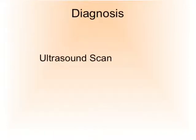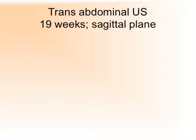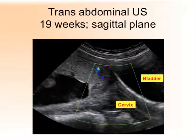Diagnosis: ultrasound scan. When applied carefully, it is very sensitive — very good at detecting low-lying placenta or placenta previa. A transvaginal scan, or a transabdominal scan if the bladder is full — if the bladder is not full, that could result in false diagnoses. An example of a transabdominal ultrasound scan at 19 weeks shows the sagittal plane. We can see here the cervix.